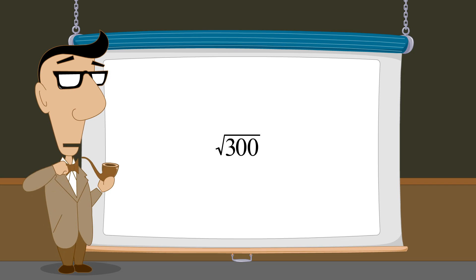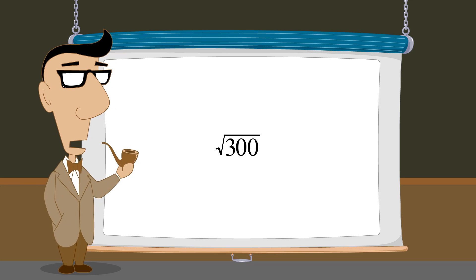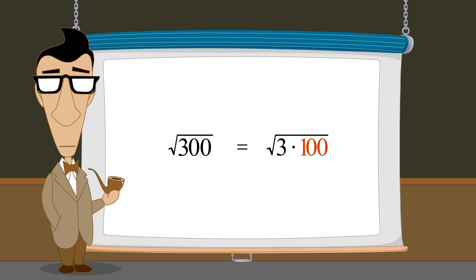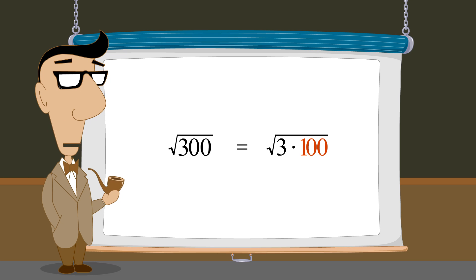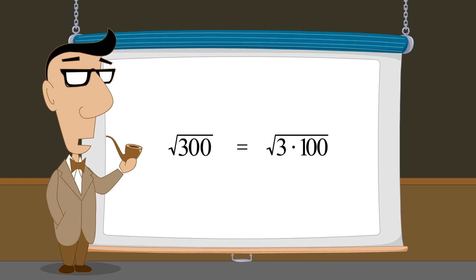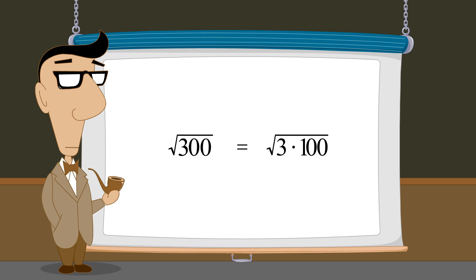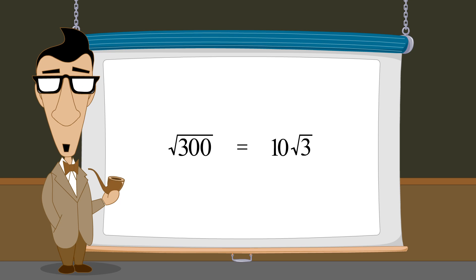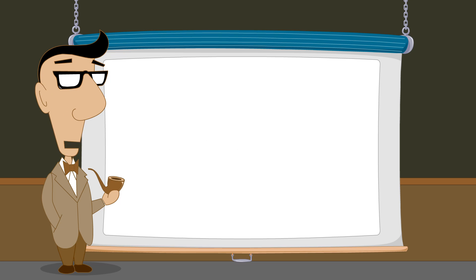In this case, it was easy to see that the number under the square root sign was the product of 3 times the perfect square 100. This allowed us to take the square root of 100 and bring it out from under the radical sign. But in many cases, it is not obvious if there are factors which are perfect squares.